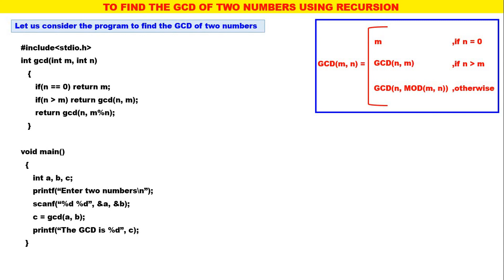I think if you remember Euclid's rule, finding the GCD of two numbers using recursion and the recursive function GCD will be quite simple and straightforward. Thank you very much.